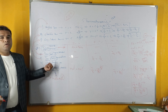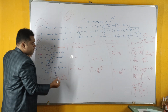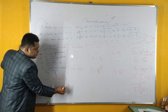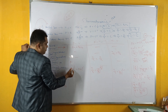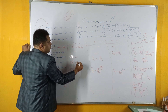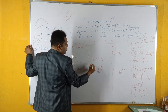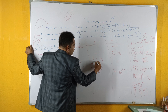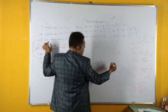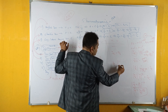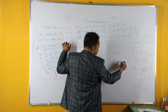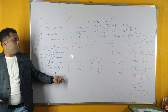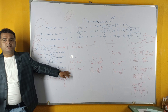Similarly, for the polytropic process, we replace the isentropic index γ with the polytropic index N. The relation between pressure and volume becomes P1V1^N equals P2V2^N. The relation between temperature and pressure is T1/T2 equals (P1/P2)^((N−1)/N), and the relation between temperature and volume is T1/T2 equals (V2/V1)^(N−1). These are the basic thermodynamic relations between pressure, volume, and temperature.